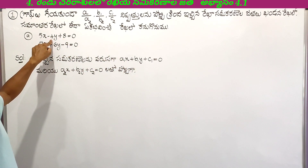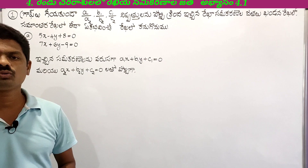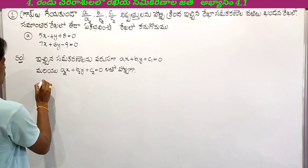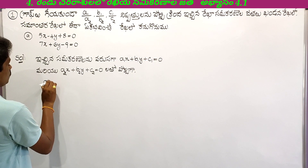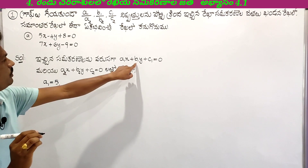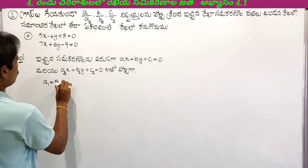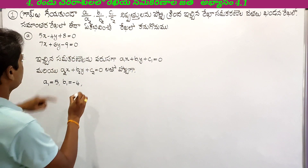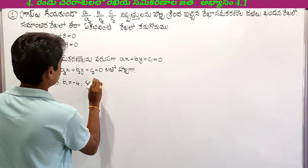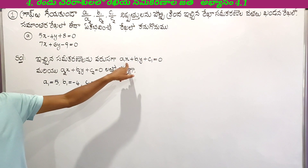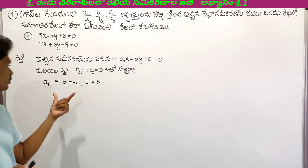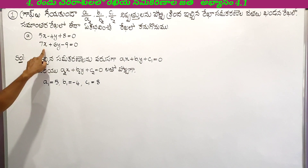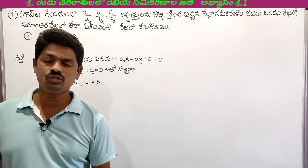The values are: b1 equal to minus 4, c1 equal to 8, a1 equal to minus 4, c1 equal to minus 4, c1 equal to 8. This is the first equation: a1x plus b1y plus c1 equal to 0. So we write a1, b1, c1. The second equation is a2x plus b2y plus c2 equal to 0.